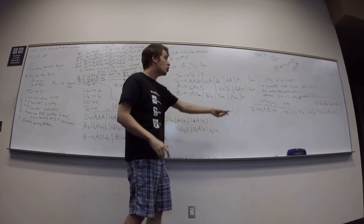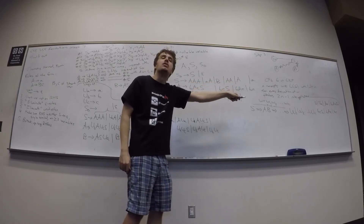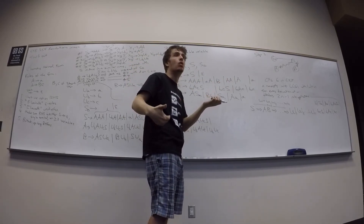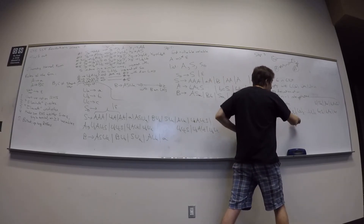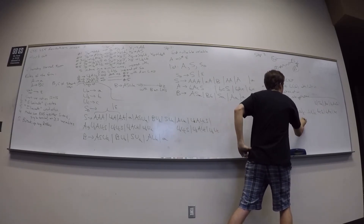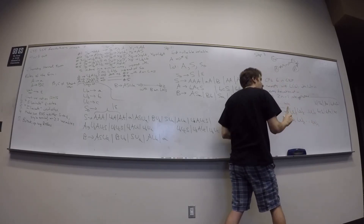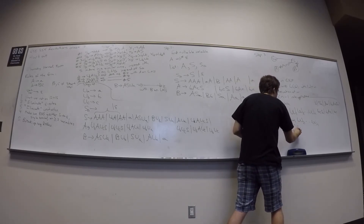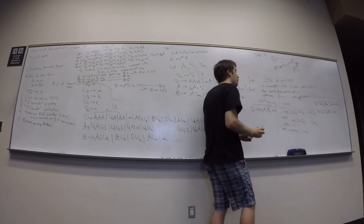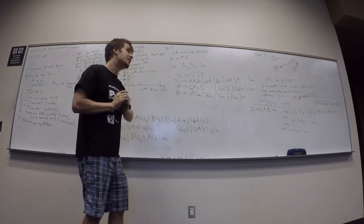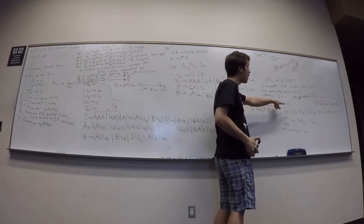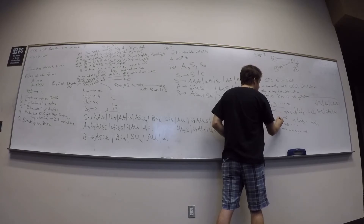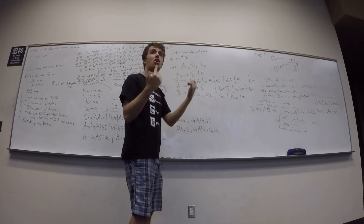Then to get from n variables to the string of n terminals, we apply one rule per variable, since each variable can only produce one character at a time. That takes n steps. So in total it's (n-1) + n = 2n minus 1 rule applications.